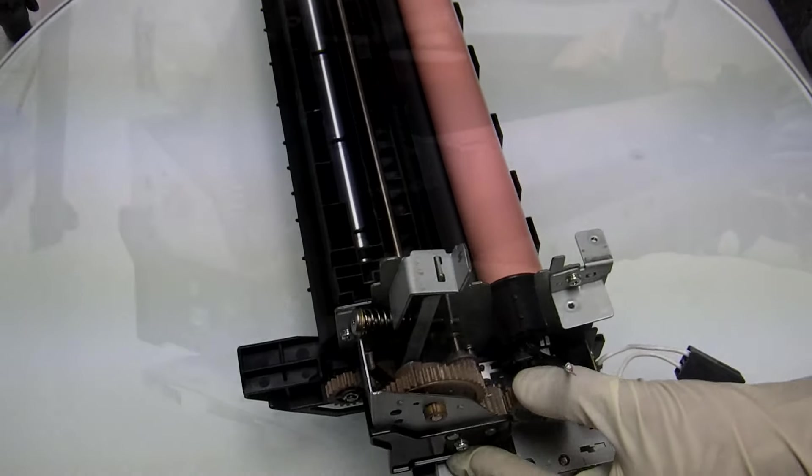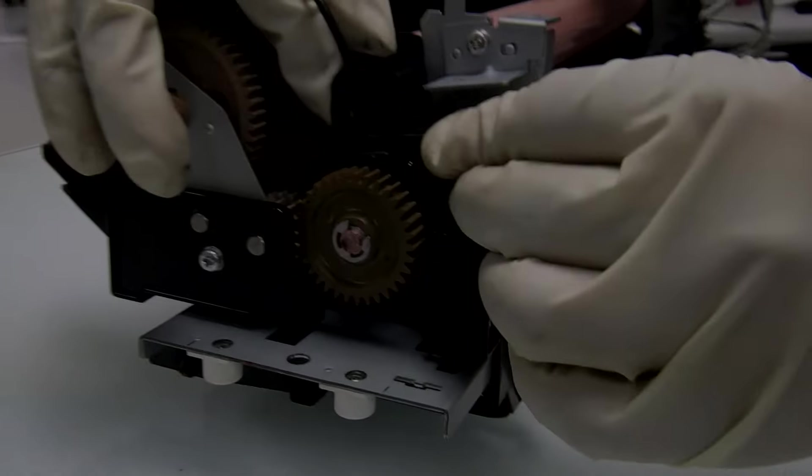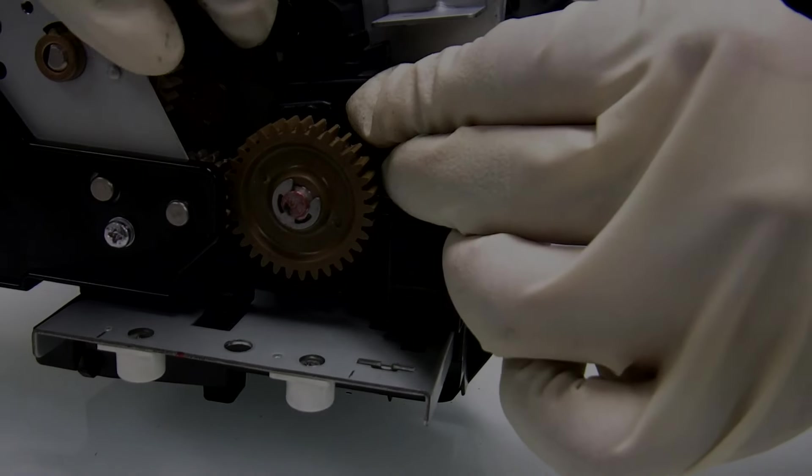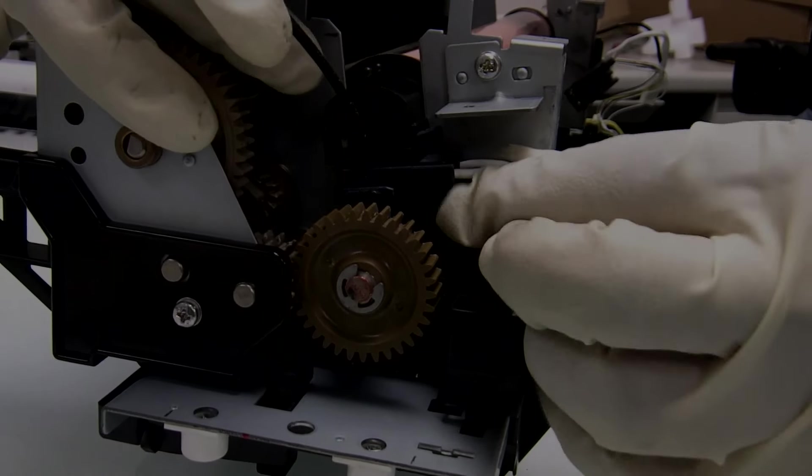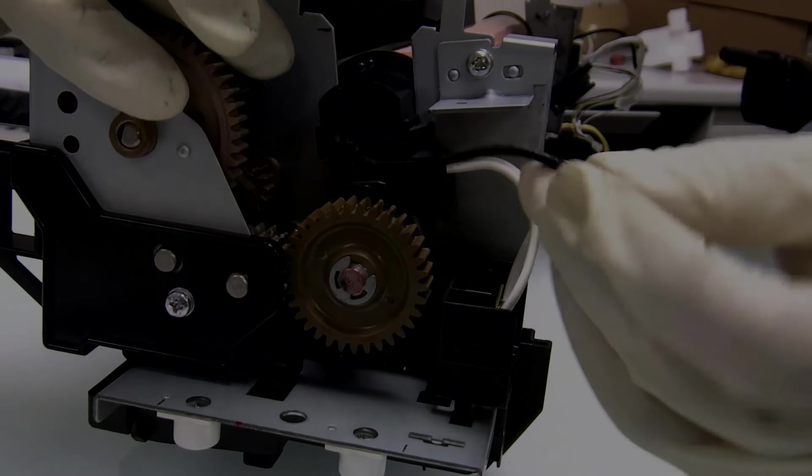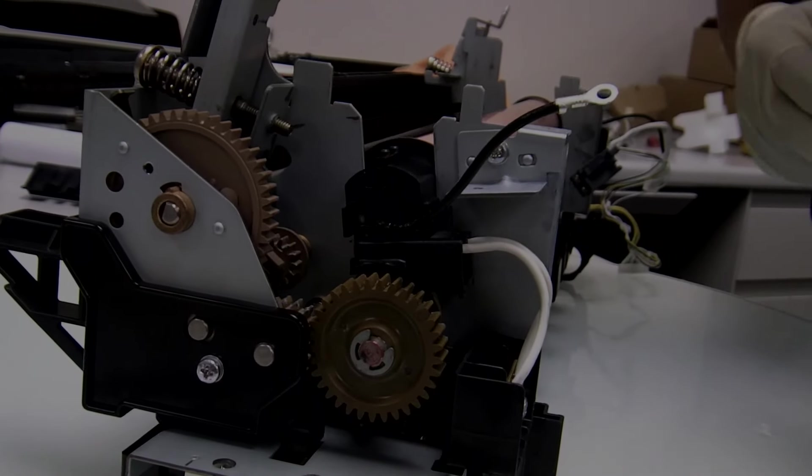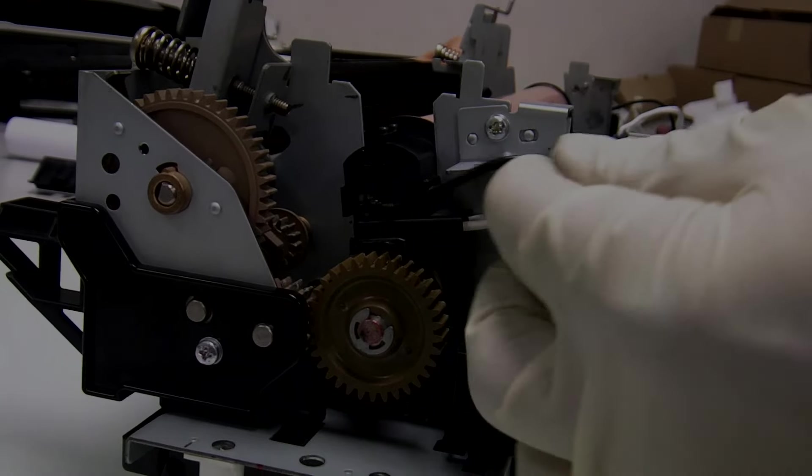Now let's connect the film assembly back in place. Start on this side. Plug back the black connector. Now you want to give it a little tug to make sure that all the cables are connected and placed properly. Now let's screw the black ground cable back in place.